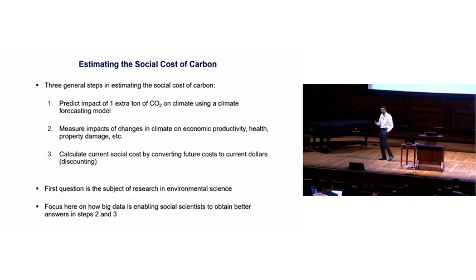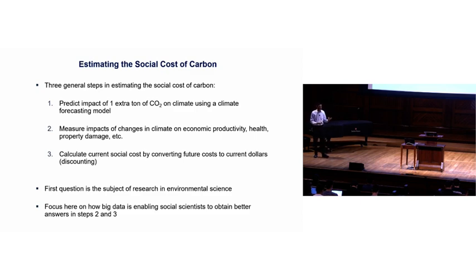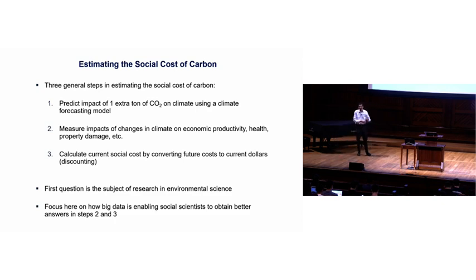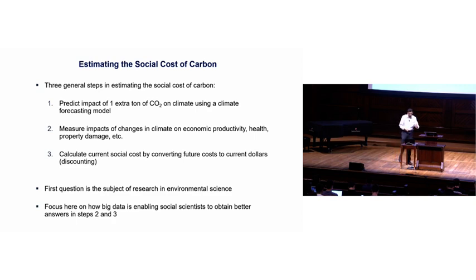The first step — how carbon emissions affect the climate — is in the domain of environmental science, involving principles of physics and climatology, so I'm going to take that off the shelf. Where economics and social science enter is in steps two and three: trying to understand how the climate affects human behavior and outcomes, and how we should think about pricing things in the present versus the future. We're going to spend time talking about work on steps two and three.